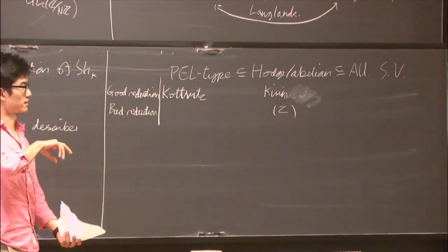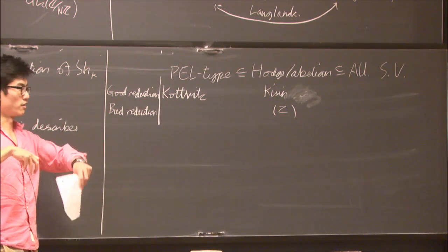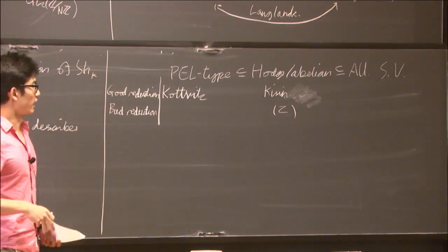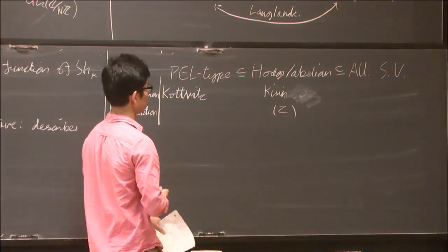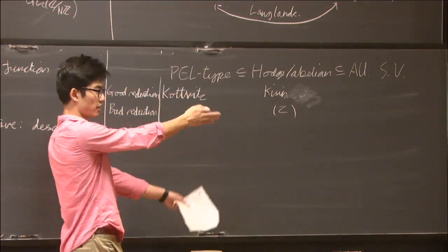Manin's problem asks if you've given a p-divisible group with symmetric slopes, whether this arises from some abelian variety up to isogeny. You can formulate this in terms of Shimura varieties. And so you can use the bad reduction of Shimura varieties to prove the result.